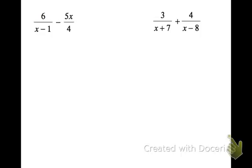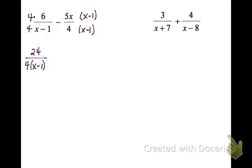On this next one, we do not have common denominators, so we need to make them. Generally, we just multiply the denominators together. I'm going to make my common denominator 4 times x minus 1. I'll multiply my first fraction, top and bottom, by 4, and my second fraction, top and bottom, by x minus 1. Rewriting, I have 24 over 4 times x minus 1, minus 5x times x minus 1 over 4 times x minus 1.